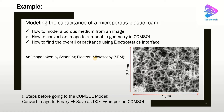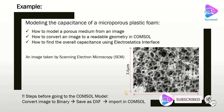Before we go to COMSOL, we need to do some image processing on this image and then we can import it. We need to convert this image to a binary format, which means we have just white and dark colors — white indicates the solid content and dark indicates the pores. We also have to save it as a DXF file because it's a 2D image, and finally we can import it to COMSOL. Let me show you the image first and then show how to process it.